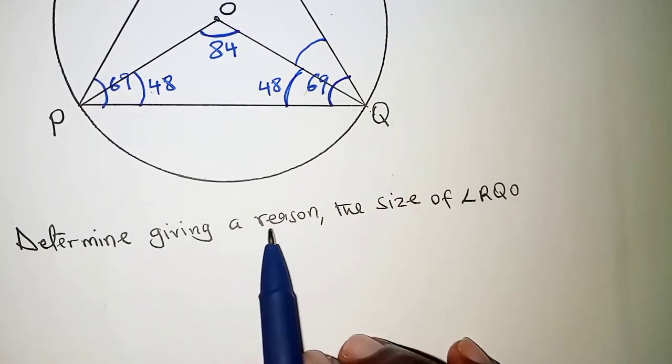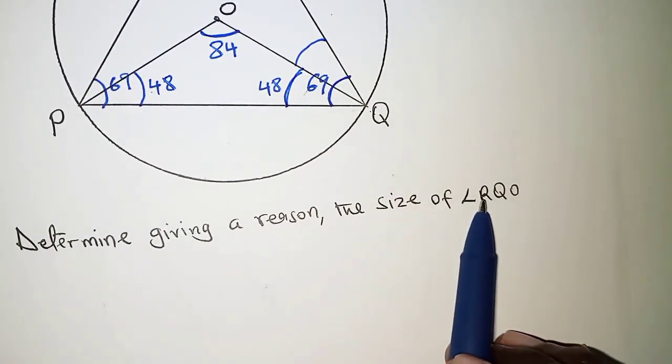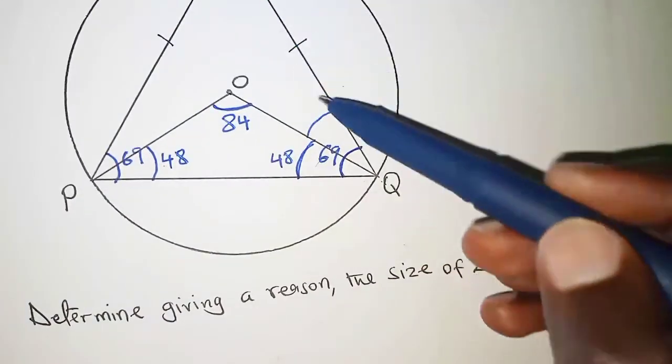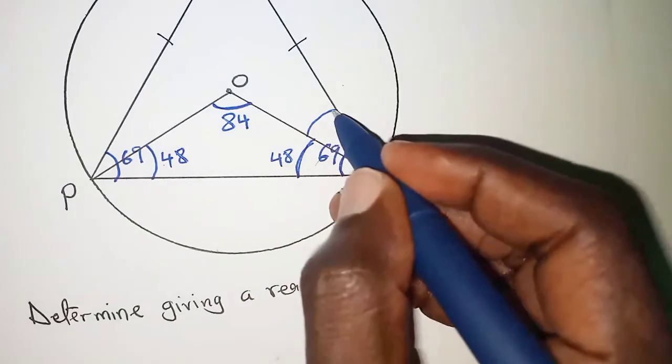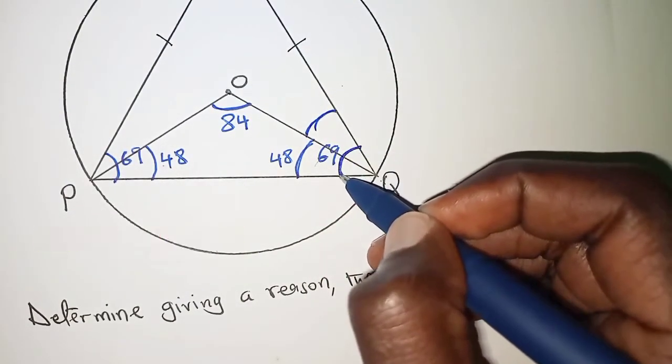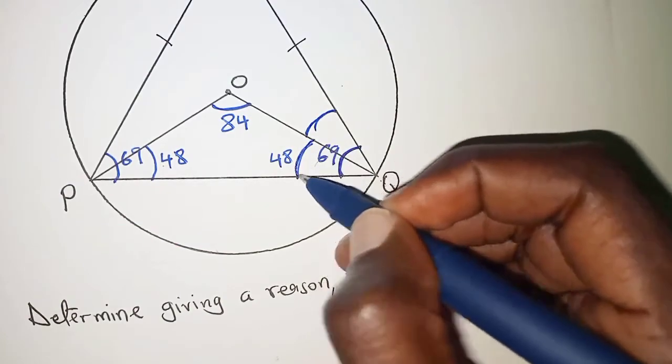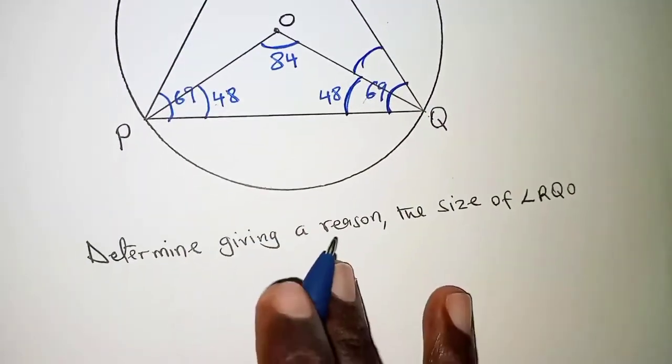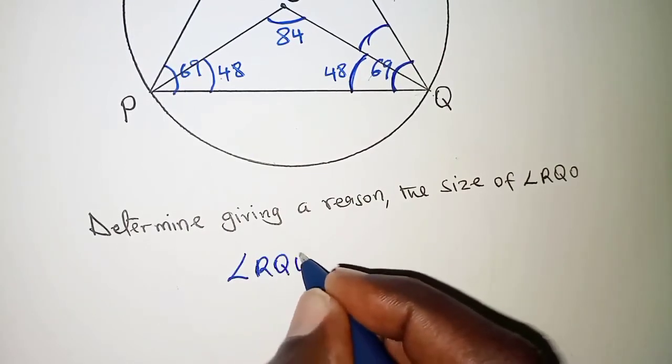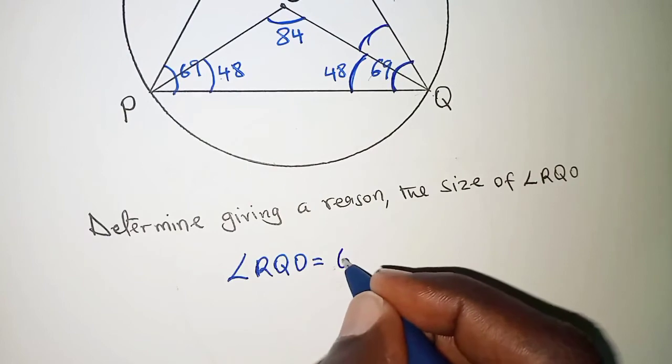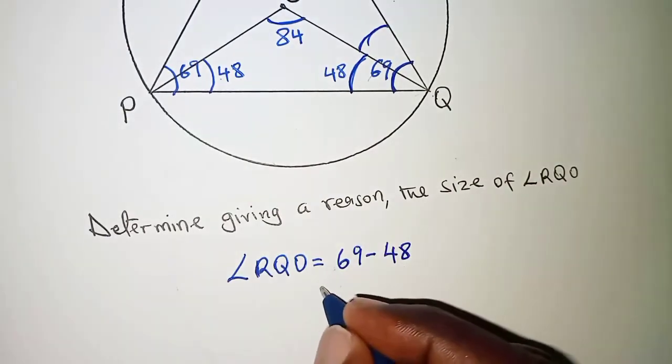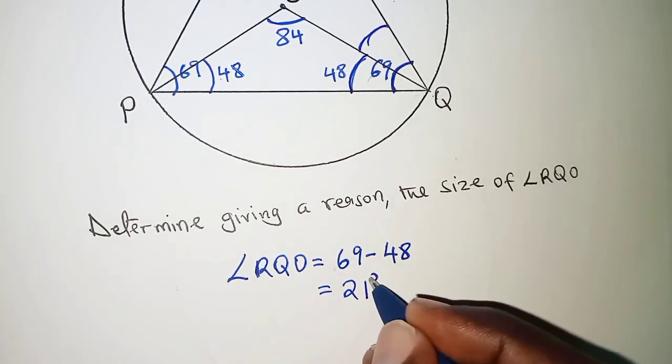Remember in the question we are told to get the size of angle RQO. The size of angle RQO, this angle here, is obtained by simply having the whole of 69 minus 48. So we say angle RQO is equal to 69 minus 48, and that is 21 degrees.